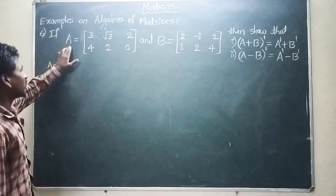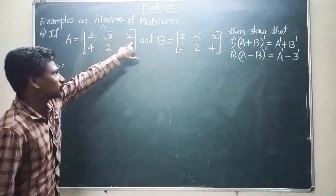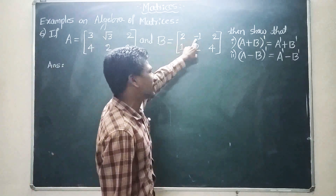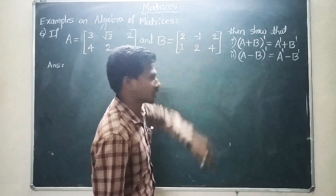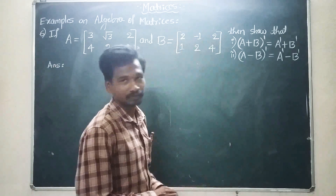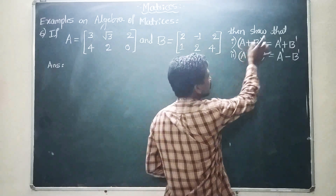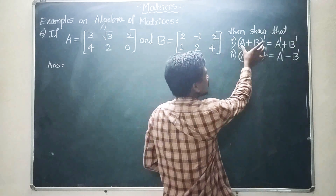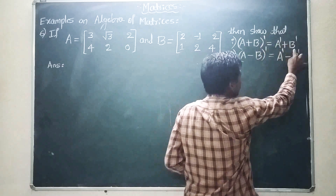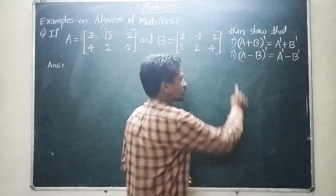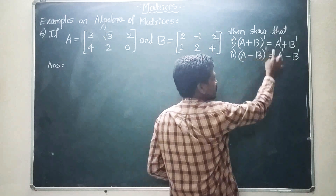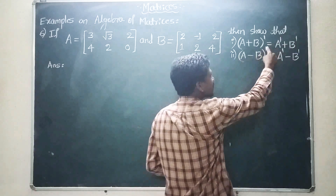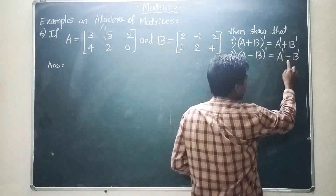Example number 6: If A is equal to 3, root 3, 2, 4, 2, 0 and B is equal to 2, minus 1, 2, 1, 2, 4. Then show that: first, A plus B whole transpose is equal to A transpose plus B transpose; second, A minus B whole transpose is equal to A transpose minus B transpose.